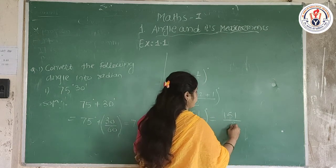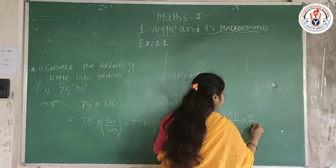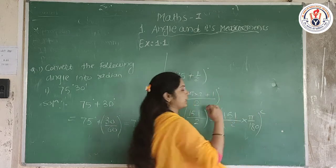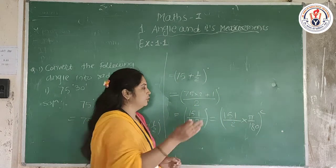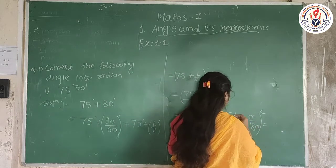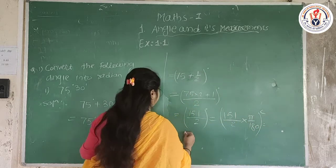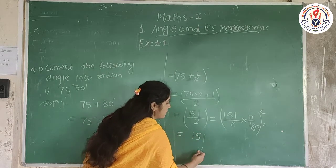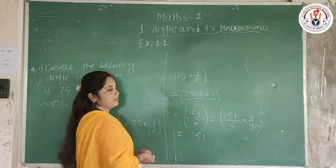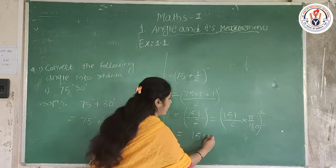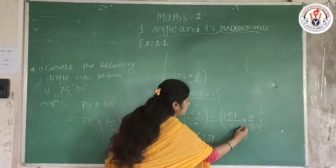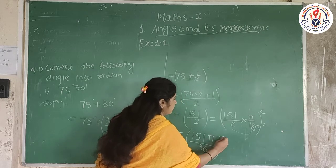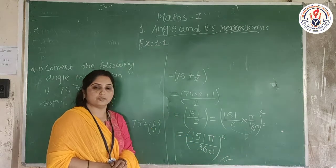So we convert 151/2 by multiplying by π/180. The conversion into radians gives us 151π divided by (2 × 360), which simplifies to 151π/720. That is the radian conversion for 75 degrees 30 minutes.